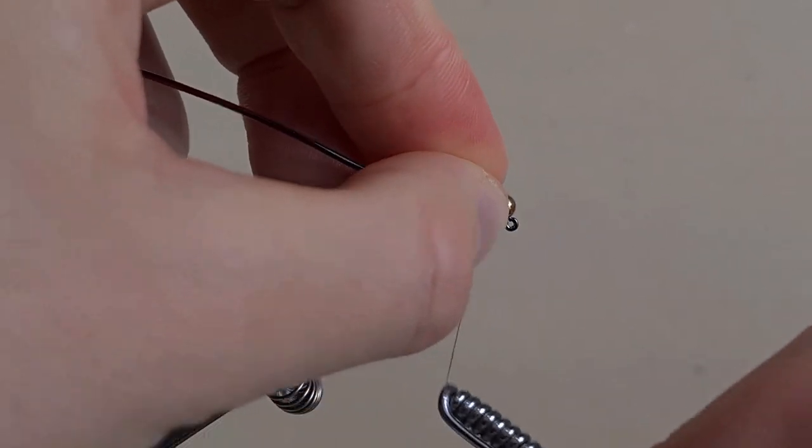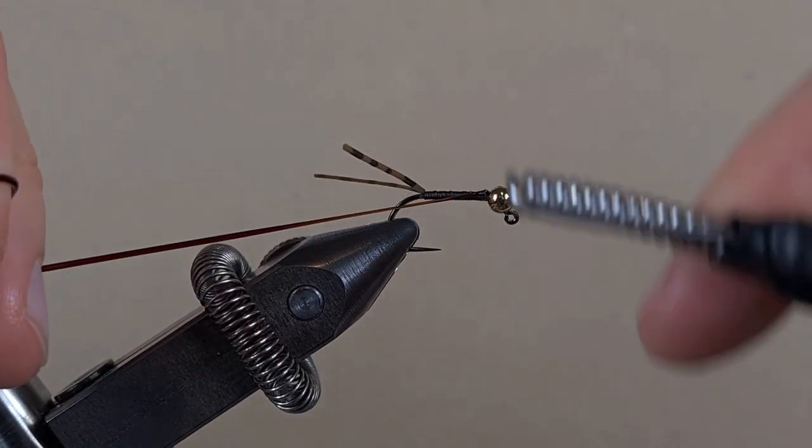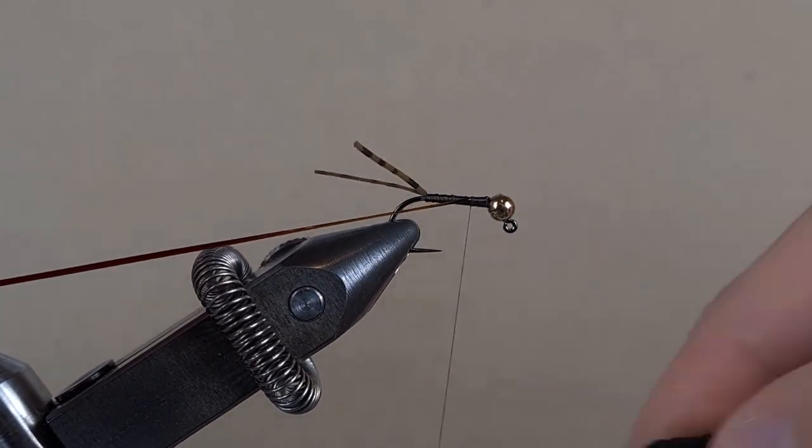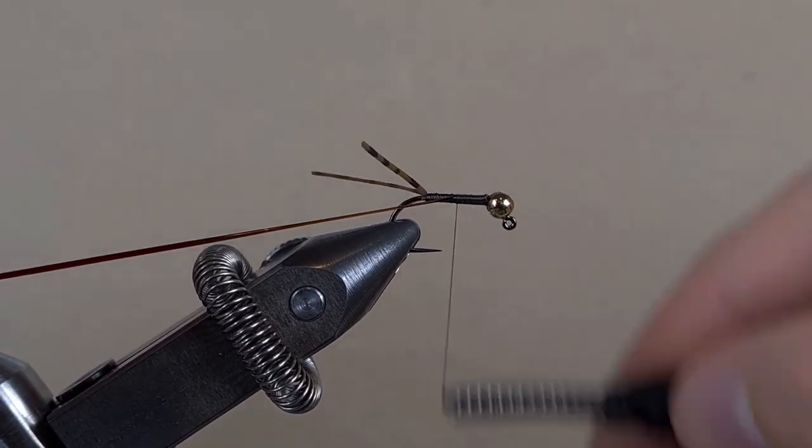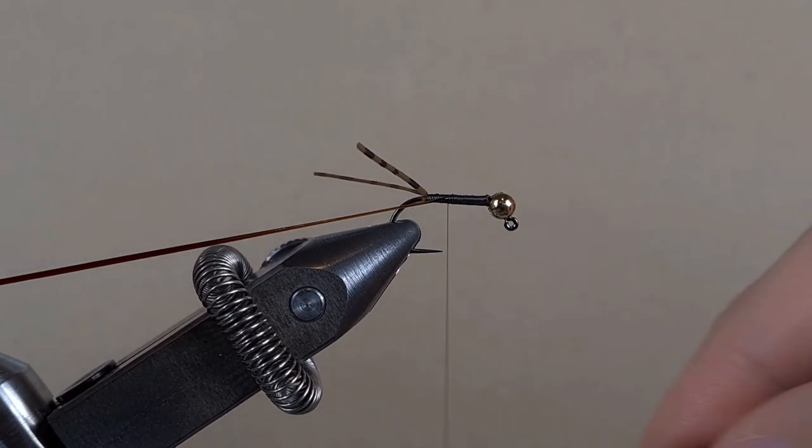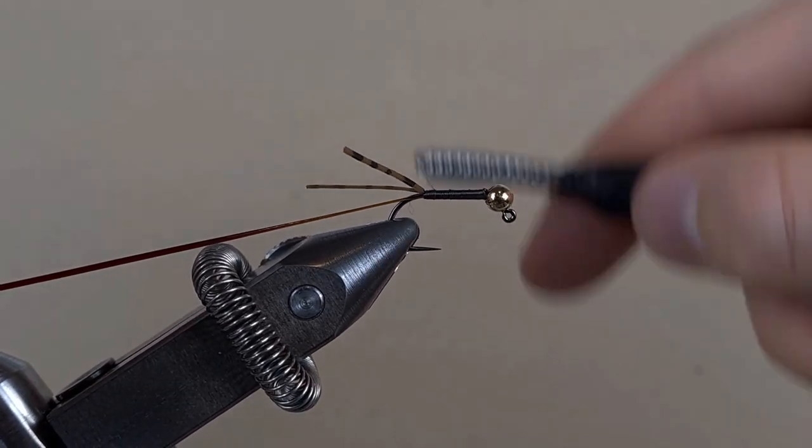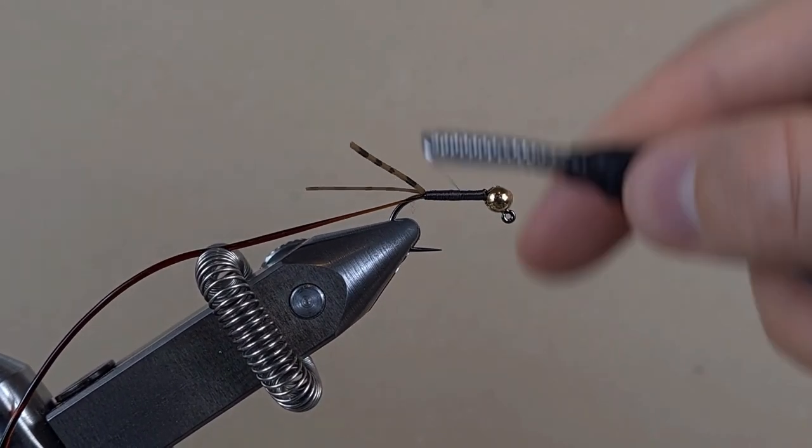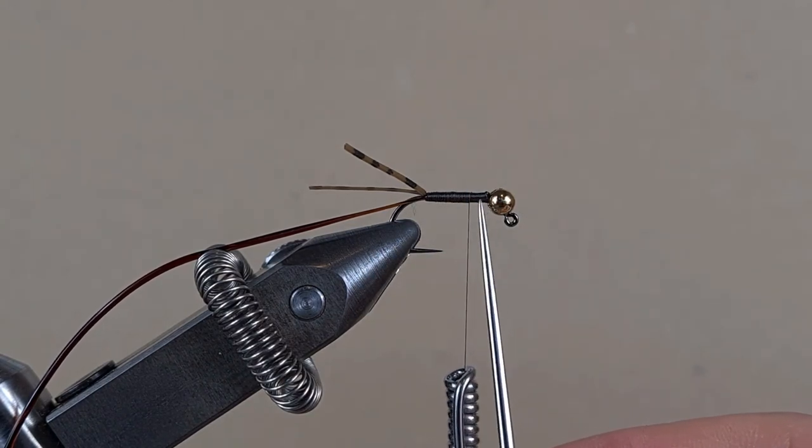Attach it at the bead. Catch it on slightly. And then while stretching, rapid touching turns. That will ensure a smooth body underneath when we're wrapping, so there's no lumps and bumps. And then touching turns back towards the bead. And then we stop about 3-4mm before the bead, because we need this room for the thorax of the nymph.